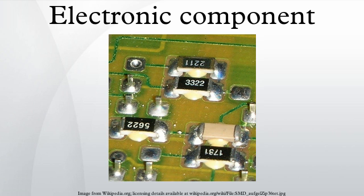Magnetic field sensors: magnetometer, Gauss meter. Humidity sensor: hygrometer. Electromagnetic and light sensors: photoresistor — light-dependent resistor.